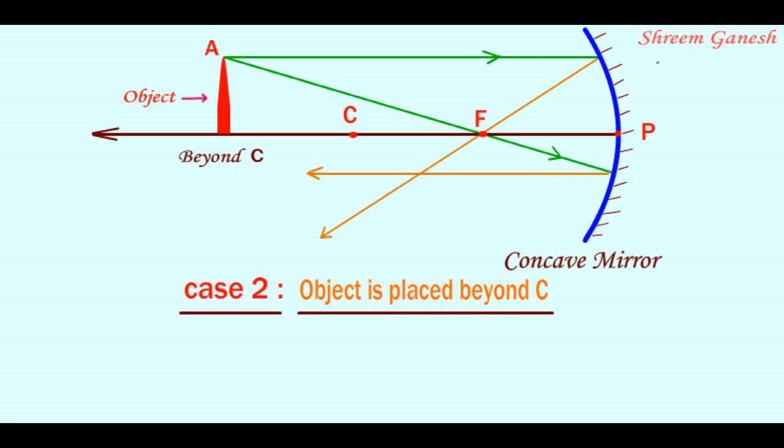So we can say that when an object is placed beyond C, in case of a concave mirror, the image is formed between C and F.